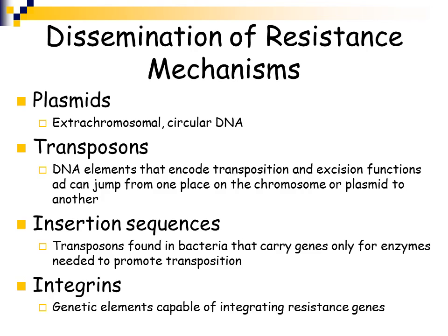Regarding dissemination of resistance: plasmids are extra-chromosomal, circular, self-replicating pieces of DNA that some bacteria can take in. Transposons are little pieces of DNA that can excise from one area of the genome and jump into another area. There are also insertion sequences that can be inserted into the genome of the bacteria and possibly give them a resistance mechanism, such as the ability to produce an enzyme.